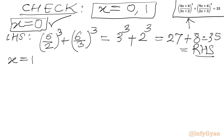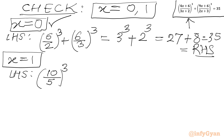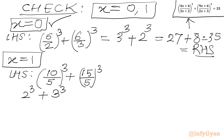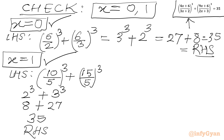Now checking x equal to 1: the LHS gives (4 plus 6) over (3 plus 2) whole cube plus (9 plus 6) over (2 plus 3) whole cube, which is (10 over 5) cube plus (15 over 5) cube, equal to 2 cube plus 3 cube, equal to 8 plus 27, which gives us 35. This matches our RHS, so x equal to 1 is also a true solution.